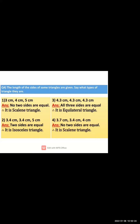Question 4: the lengths of sides of some triangles are given; identify what type of triangle they are. First: 3 cm, 4 cm, and 5 cm — all sides are different, not a single side is equal, so it is a scalene triangle.